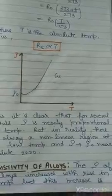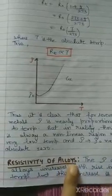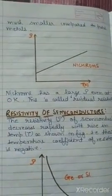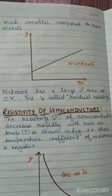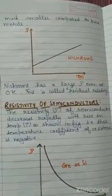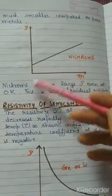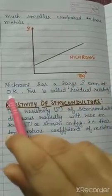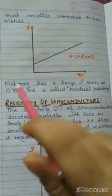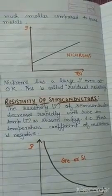Next is the resistivity of alloys. The resistivity of alloys also increases with the increase in temperature, but this increase is smaller compared to pure metals. For nichrome, you can see from the graph that it has a very large resistivity even at zero Kelvin — this is called residual resistivity. The resistivity that nichrome has at zero Kelvin is your residual resistivity.